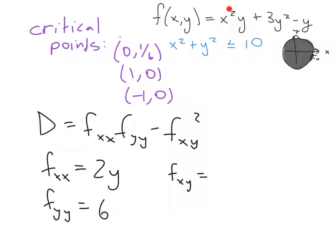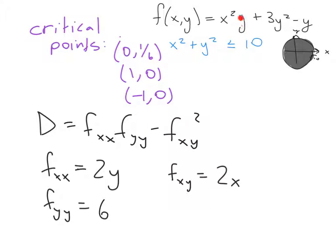Computing the second partials: f_xx = 2y (differentiating 2xy with respect to x twice). For f_yy, the only relevant term is 6y, giving f_yy = 6. For f_xy, the mixed term from 2xy gives f_xy = 2x.